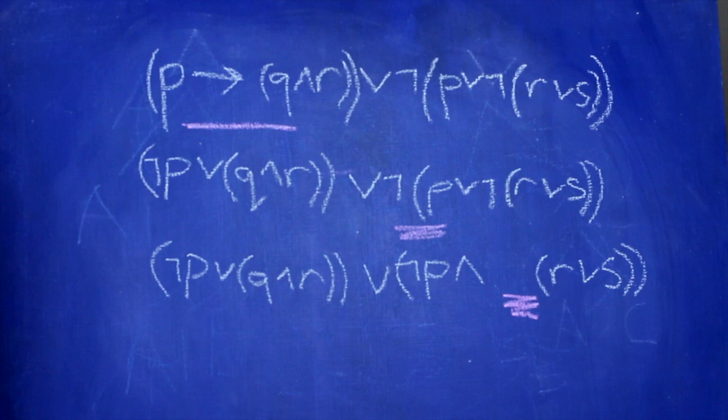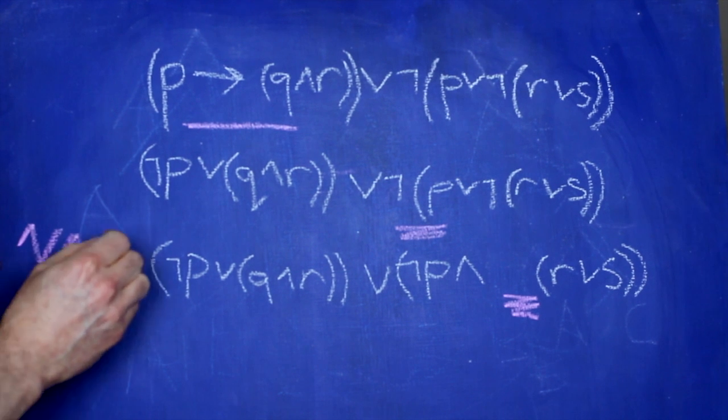Now we have a sentence where negation symbols only appear in front of primitive sentences. That sentence is in negation normal form.